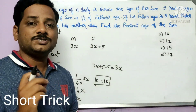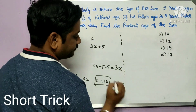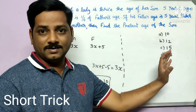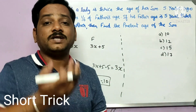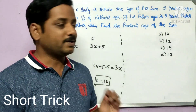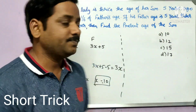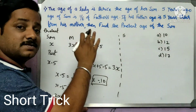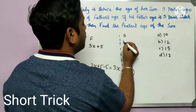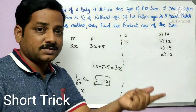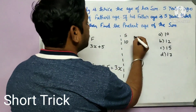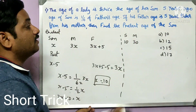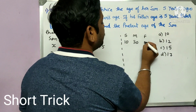Now let's look at the shortcut method. Instead of forming expressions, you look at the options and test them directly. Take the first option: son's age = 10. According to the statement, mother's age is thrice the son's age, so mother = 30. Father is five years older than mother, so father = 35.